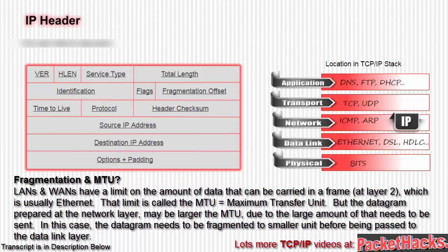The datagram prepared at the network layer may be larger than the MTU due to a large amount of data that needs to be sent. In this case, the datagram needs to be fragmented into smaller units before being passed on to the data link layer.